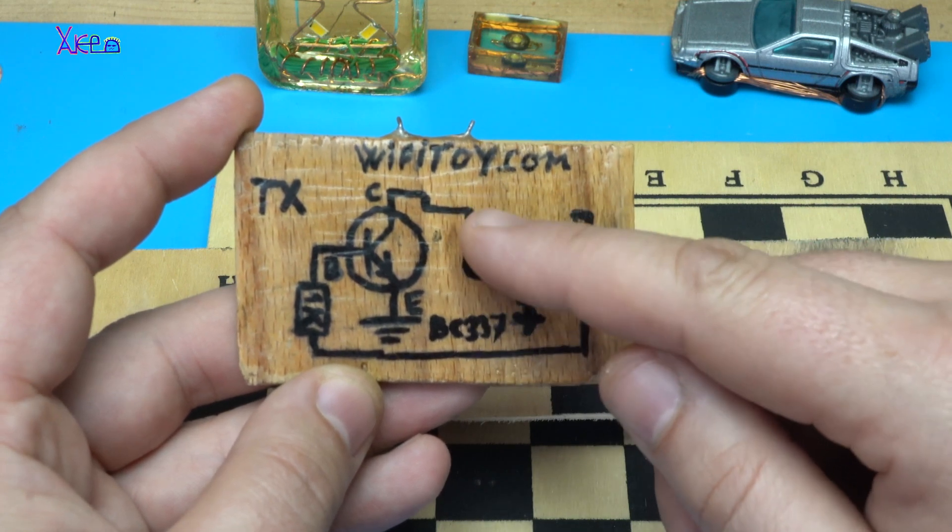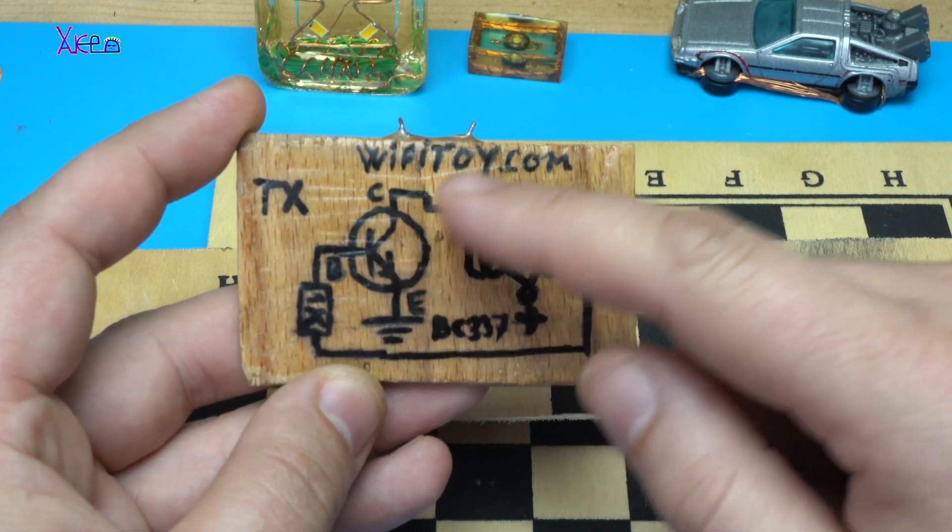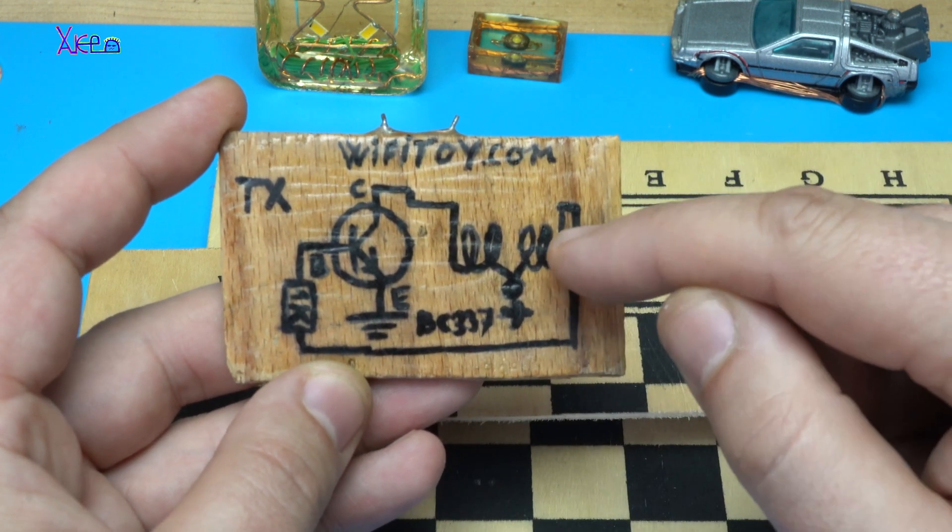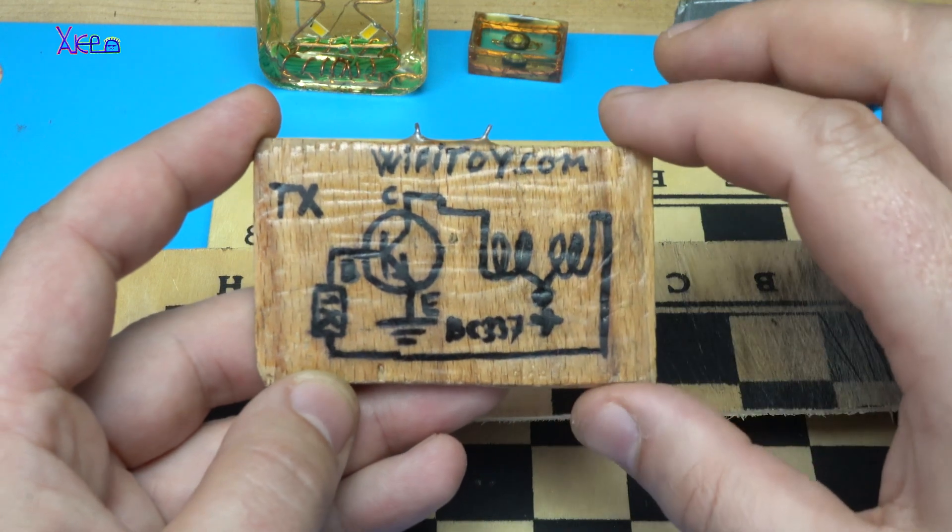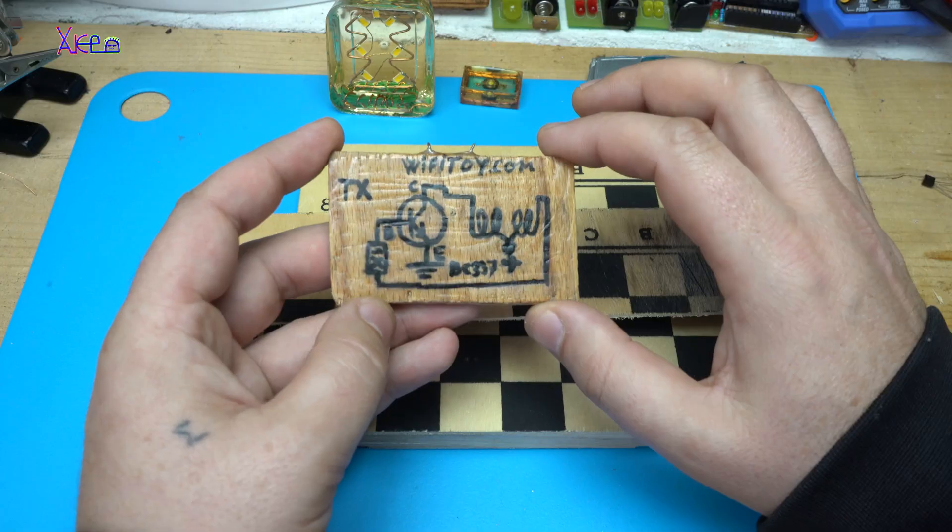One end of the coil will end on the collector of the transistor and the other end of the coil will be connected on the resistor. It's a simple circuit.